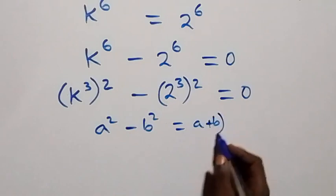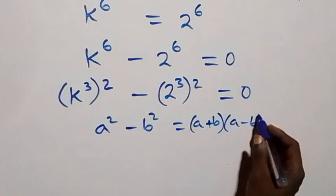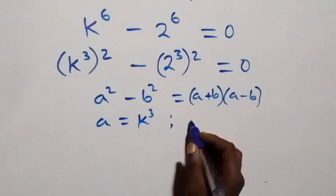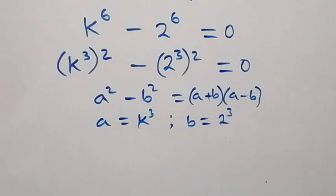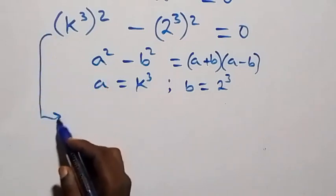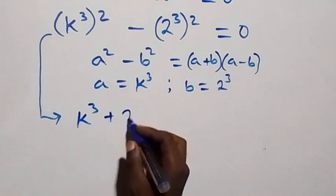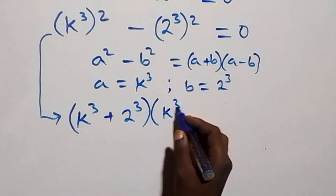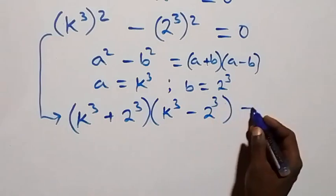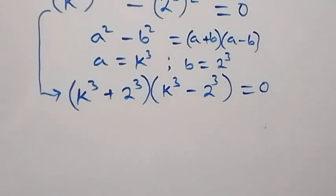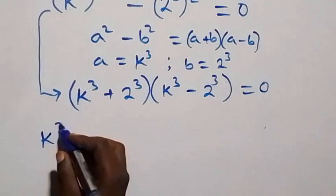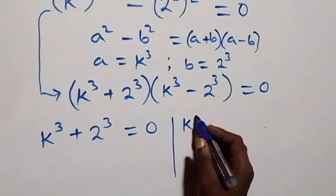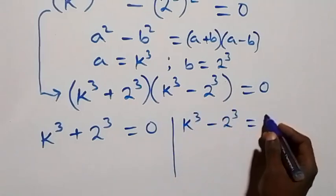This follows from a squared minus b squared equals (a plus b)(a minus b). Comparing, we have a as k raised to power 3 and b as 2 raised to power 3. So the equation becomes (k³ plus 2³) times (k³ minus 2³) equals 0. From here we have two cases: k raised to power 3 plus 2 raised to power 3 equals 0, or k raised to power 3 minus 2 raised to power 3 equals 0.